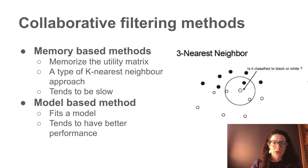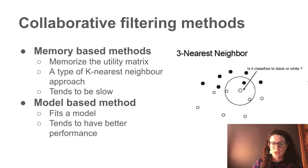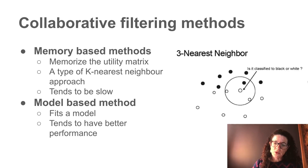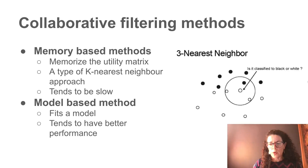Collaborative filtering methods are divided into memory-based and model-based types. In memory-based methods, you have the utility matrix of user ratings for every item. A KNN approach finds distances between users, and for a particular item finds your k nearest neighbors to make a prediction based on those neighbors. You can also do the opposite — find distances between items and use item-based nearest neighbors.